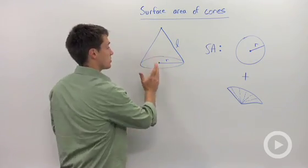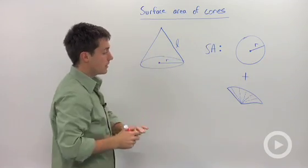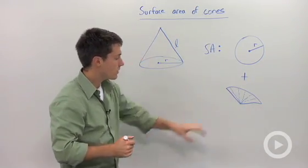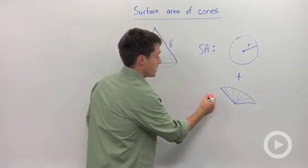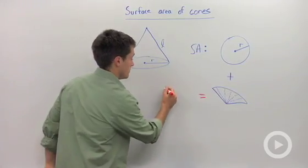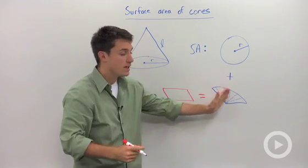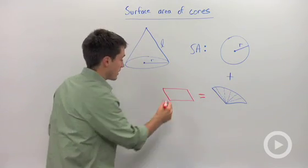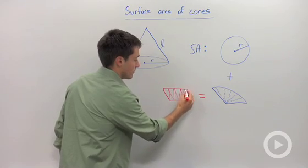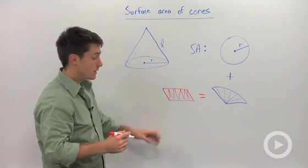If I took scissors and cut the cone part and fanned it out, it would look like a sector. What I could do here is rearrange this sector into a parallelogram. If I cut this into really tiny pieces, then I would be able to organize it into a parallelogram where I would be able to calculate its area.